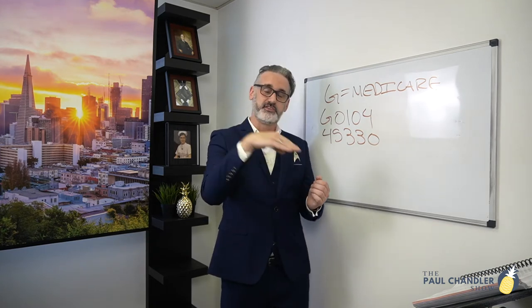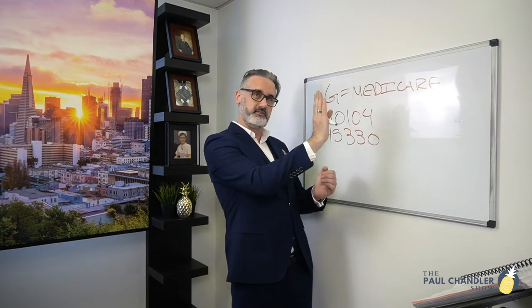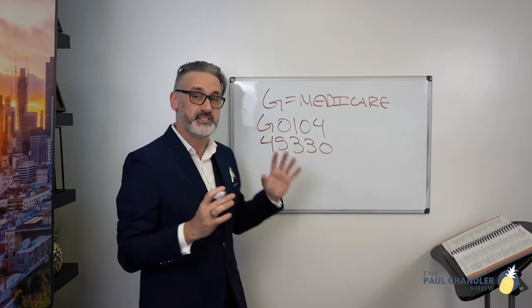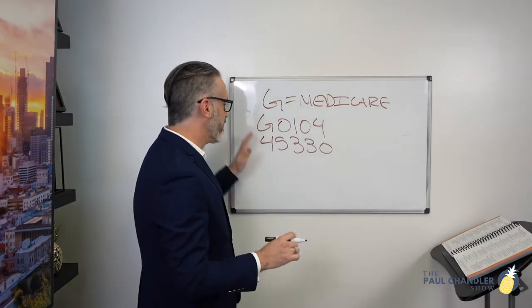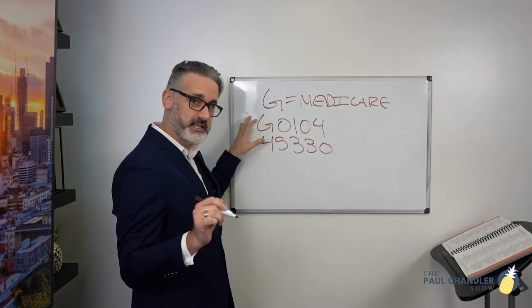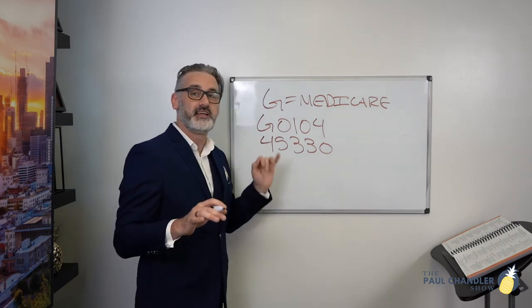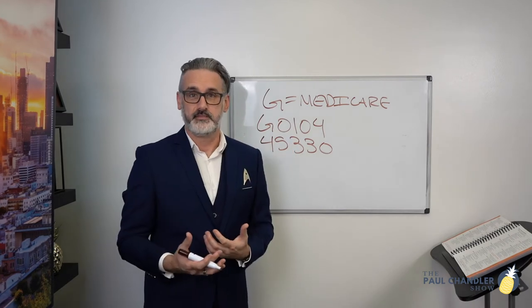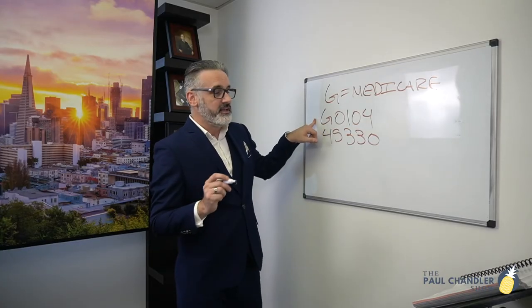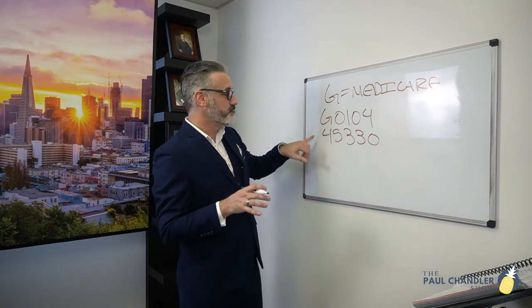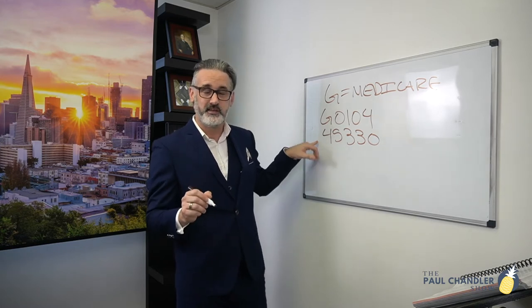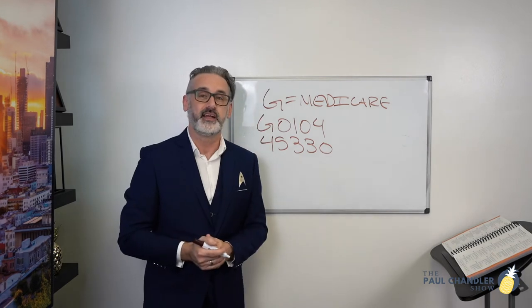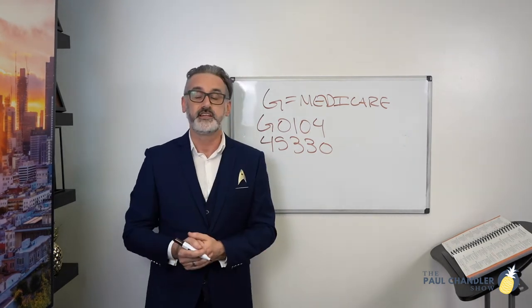Breaking that down — sigmoidoscopy, scope goes up the bum. The scopes go counterclockwise, as it pairs to how the digestive system track goes. The scope goes up the rectum, hangs a right, and goes down the sigmoid colon across it, before it hangs a left and goes up the descending colon. Both of these codes deal with sigmoidoscopies, but notice the verbiage difference: G0104 is colorectal cancer screening, while 45330 is diagnostic sigmoidoscopy. In the G-code for Medicare, G0104 uses the term screening, but 45330 uses the term diagnostic.